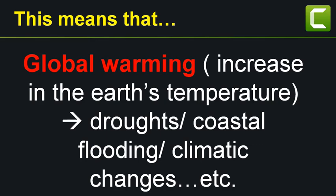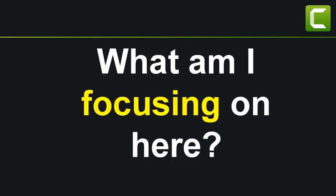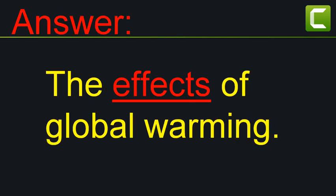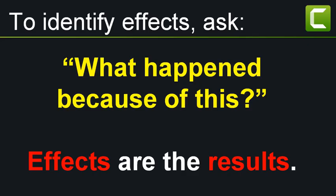This means that global warming, which is an increase in the earth's temperature, causes droughts, coastal flooding, and climatic changes. What am I focusing on here? The answer is: I am focusing on the effects — the effects of global warming. So, to identify effects, ask 'what happened because of this?' Effects are the results.